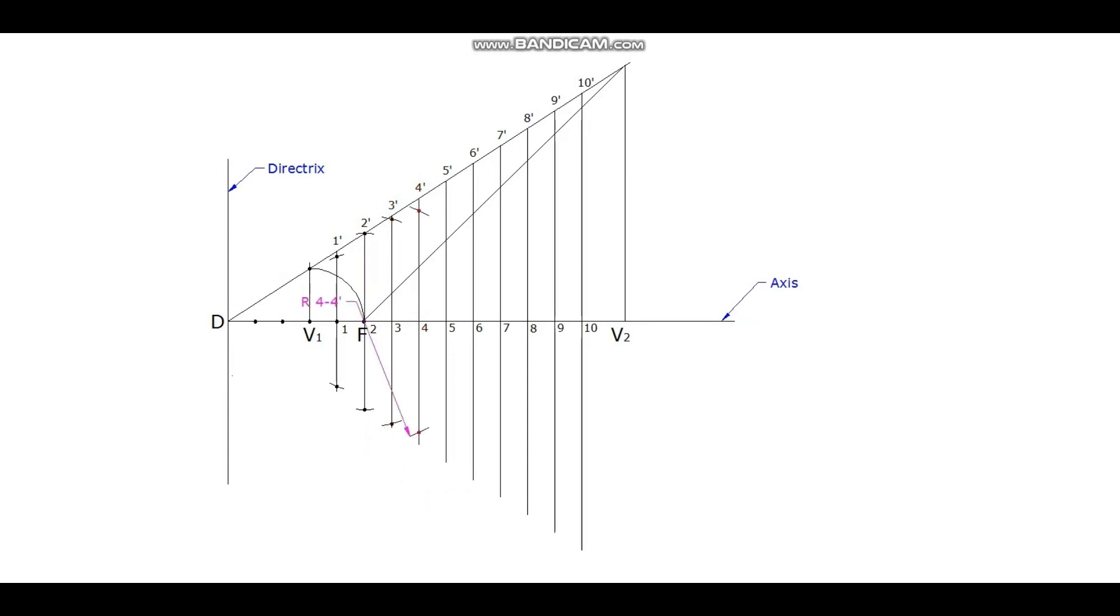Cut it on the same line on both the sides. Measure 5, 5 dash, mark points on the same line on both the sides. Measure 6, 6 dash on the same line on both the sides. Measure 7, 7 dash, cut arcs on the same line on both the sides. Measure 8, 8 dash, arcs on the same line on both the sides. 9, 9 dash, points on the same line on both the sides.